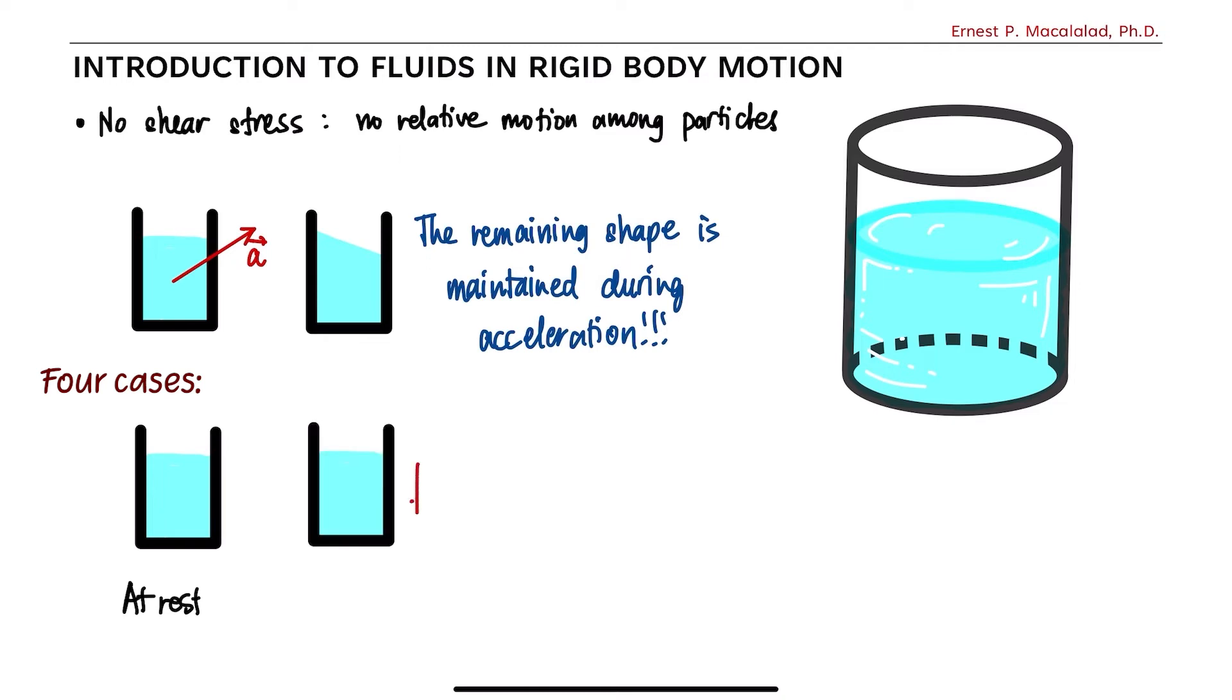Another case that we're going to consider is when the rigid body and the fluid in it are undergoing freefall motion. So what happens with the fluid shape when it undergoes freefall motion together with the rigid body? In this case, we're going to consider the acceleration to be the acceleration due to gravity.